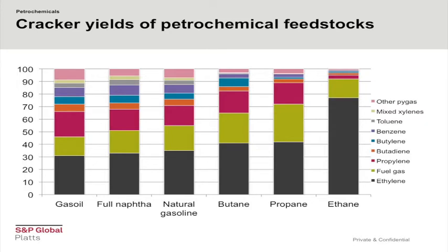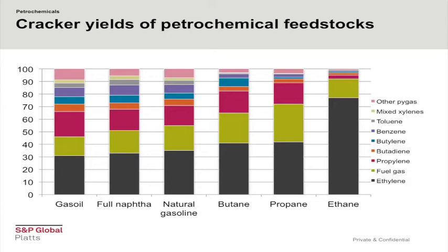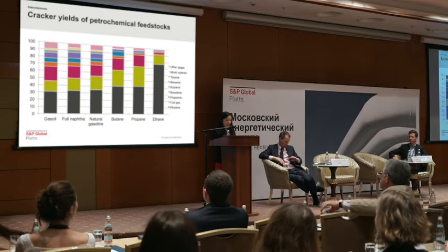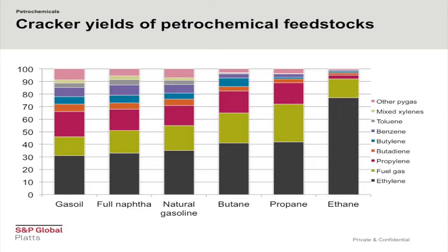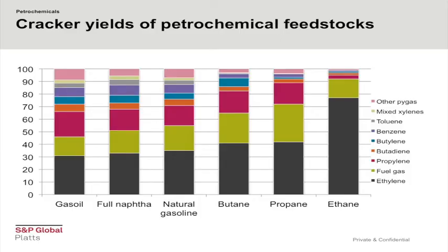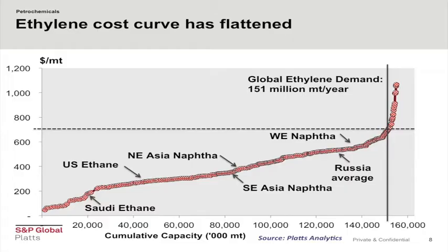To fully understand the impact of feedstock price changes, it's useful to look at the various cracker yields by feedstock. The main feedstocks are gas oil, naphtha, gasoline, butane, propane, and ethane. Each bar shows the proportions of each petrochemical product derived from each feedstock. Ethylene, shown in grey, is one of the most important petrochemicals as it is the core building block for a vast range of products. Ethane yields the most ethylene — just under 80% — but a much smaller proportion of other products such as aromatics. Naphtha yields only around 30% ethylene but a much higher proportion of propylene, butadiene, and aromatics.